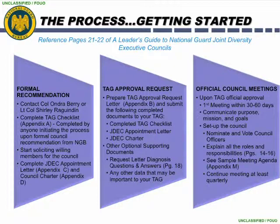Once the formal recommendation phase is complete, you will move into the TAG approval request phase. In this phase, prepare the TAG approval request letter found in Appendix B and submit the following completed documents to your TAG: the completed TAG checklist, JDEC appointment letter, and the JDEC charter. Other optional supporting documents you may include in your package are the request letter, diagnosis question and answer from page 18, and any other data that may be important to your TAG.